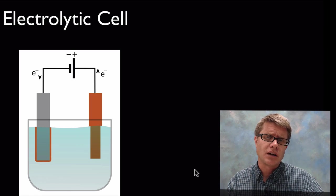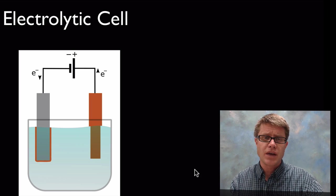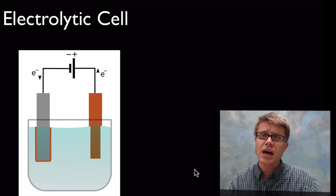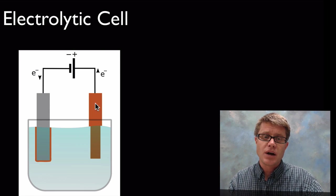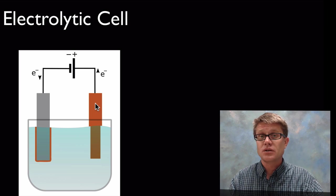Now what's an electrolytic cell? It's really essentially the opposite of that. In this one what we're going to do is add current. In this case we're adding a battery on this side and we're actually going to cause electrons to flow.